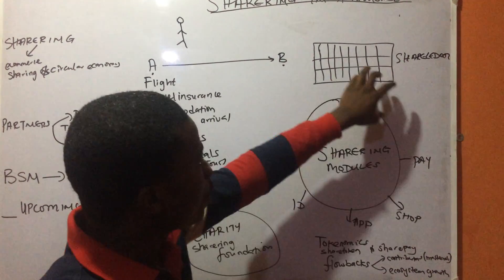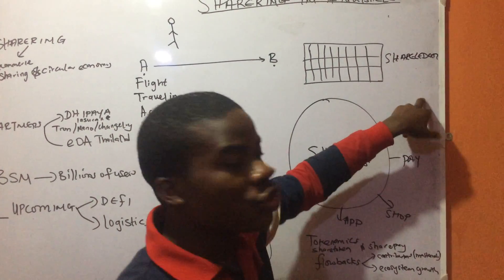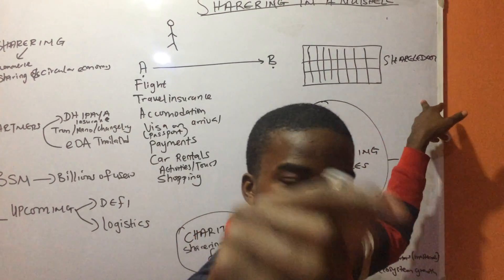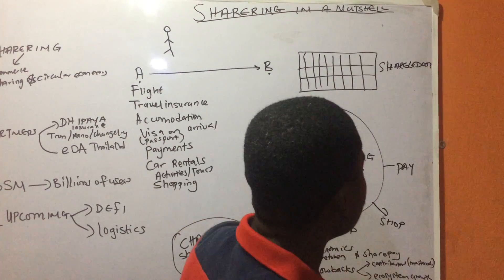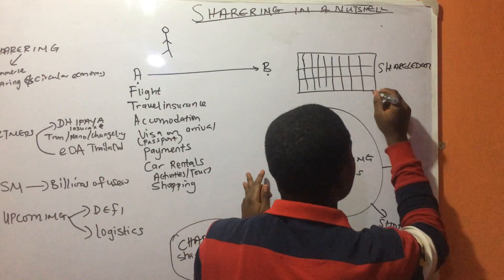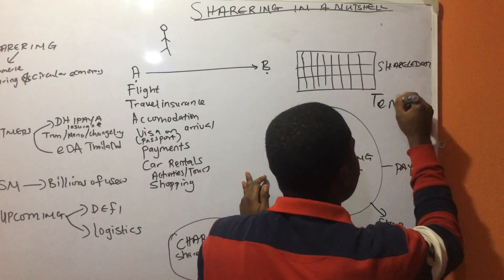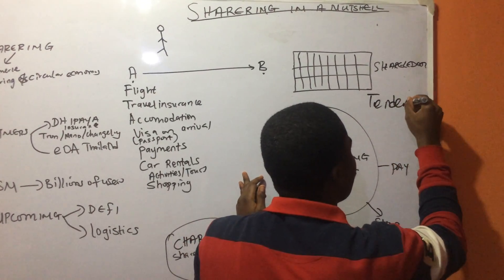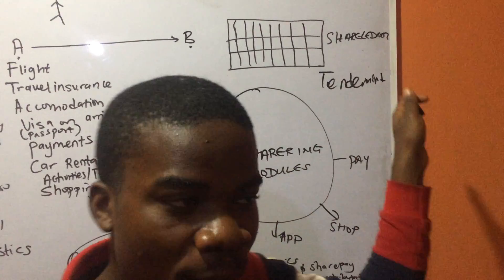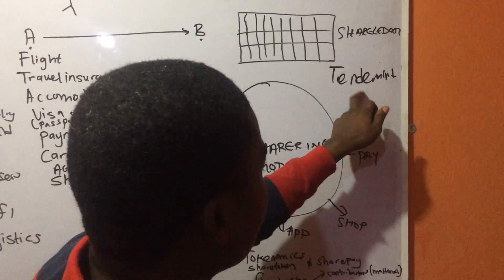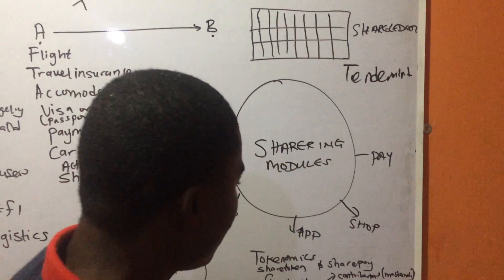One important thing to know is that Sharing has their own ledger, called the Shared Ledger. It is built on the Tendermint consensus.